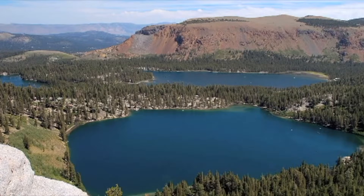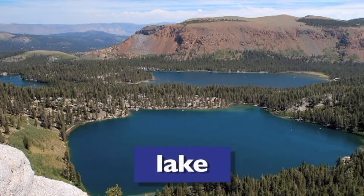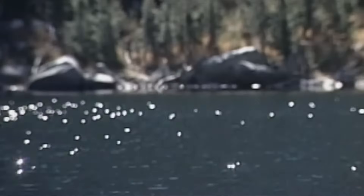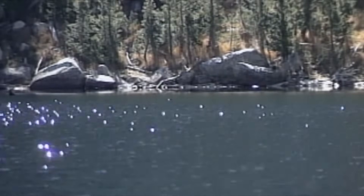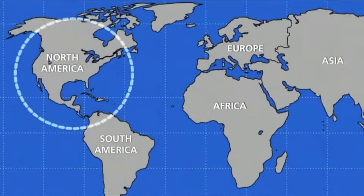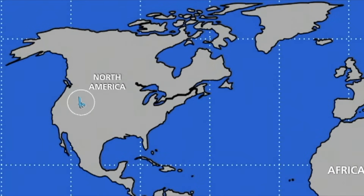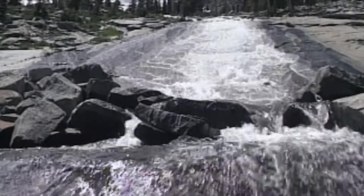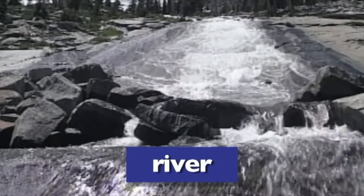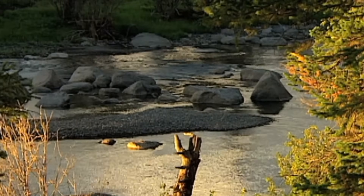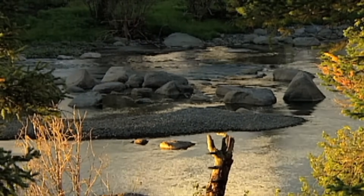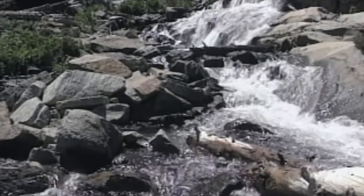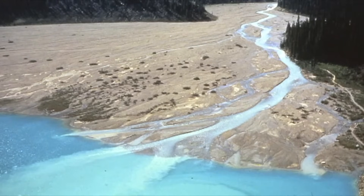A lake is a body of water surrounded by land. Most lakes are freshwater, but there are a few that are saltwater lakes, like the Great Salt Lake in North America. Some water is constantly flowing — geographers call them rivers. Rivers are always on the move, carrying water across the land. Most rivers begin in the mountains and end in the ocean. The place where some rivers end is called a delta.